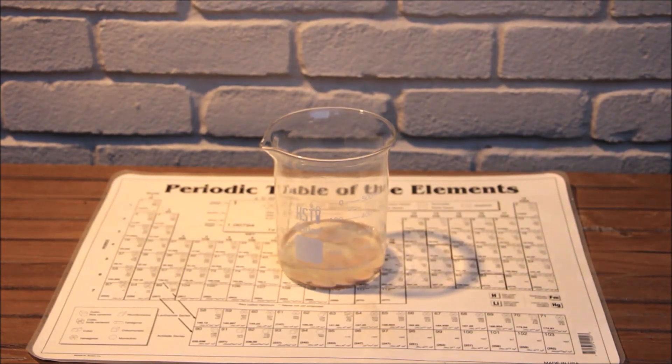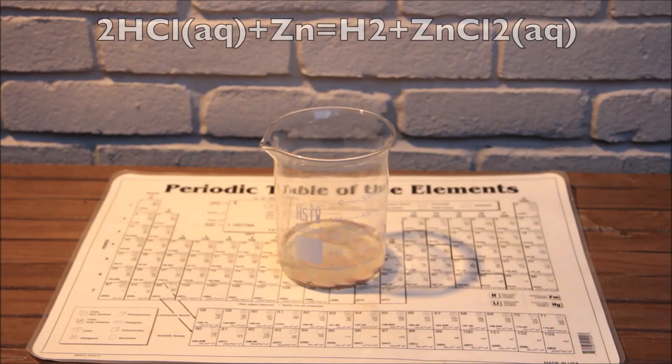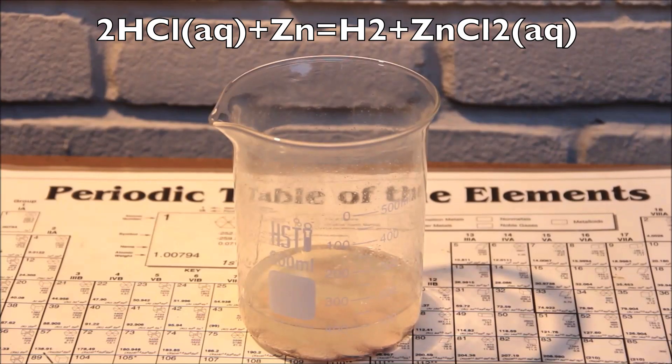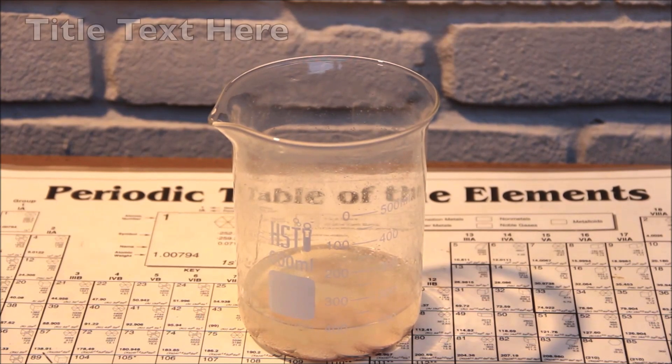Once the acid is added to the pennies, hydrogen gas is produced, which are the bubbles shown, and the corresponding zinc salt. Since I'm using hydrochloric acid, zinc chloride is produced.